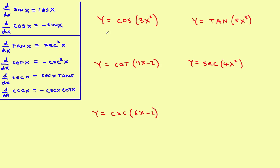The derivative of this one — and this is like one of each type — y prime equals the derivative of cosine, which is negative sine. Then rewrite the original inner part, then times the derivative of what's on the inside, which would be 6x, and you are done.